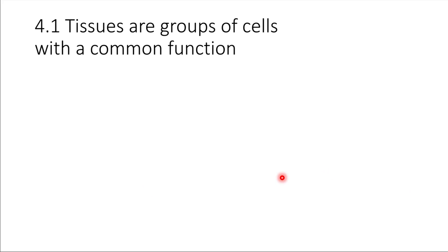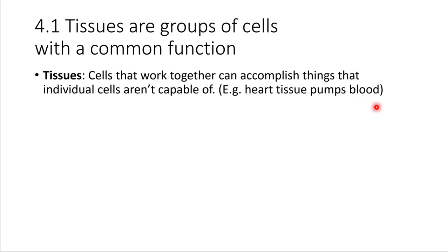What do we mean when we use the word tissue? A tissue is a group of similar cells that are all working together to accomplish something. They have to be the same type and variety, located nearby so they can communicate. A good example is the tissue that makes up the heart — muscular tissue that is capable of contracting, and that contraction allows the heart to pump blood. Individual cells would not be able to pump blood on their own, but if you put enough of them together and they coordinate, they are capable of this larger function.